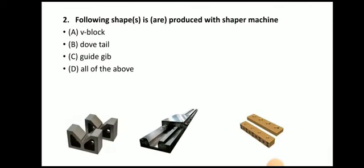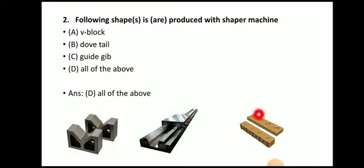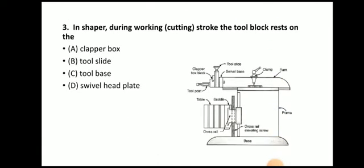Next question: which of the following shapes are produced with a shaper machine? V-block, dovetail, guide ways — all of the above. The answer is all of the above. Here you can see an example of a V-block, a dovetail, and guide ways. Such shapes are produced with the help of a shaper machine.